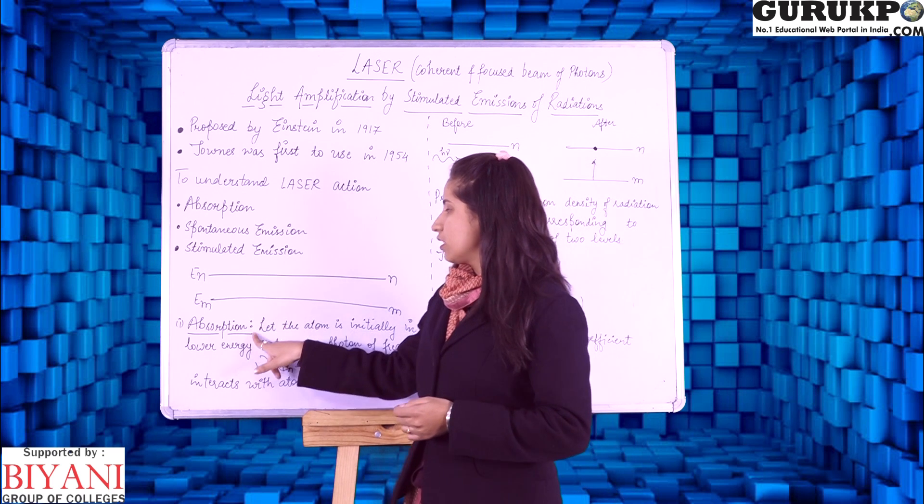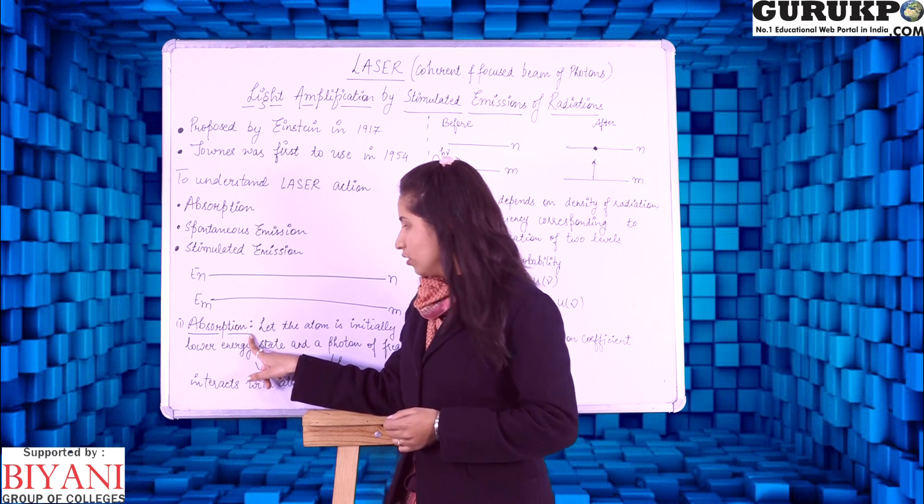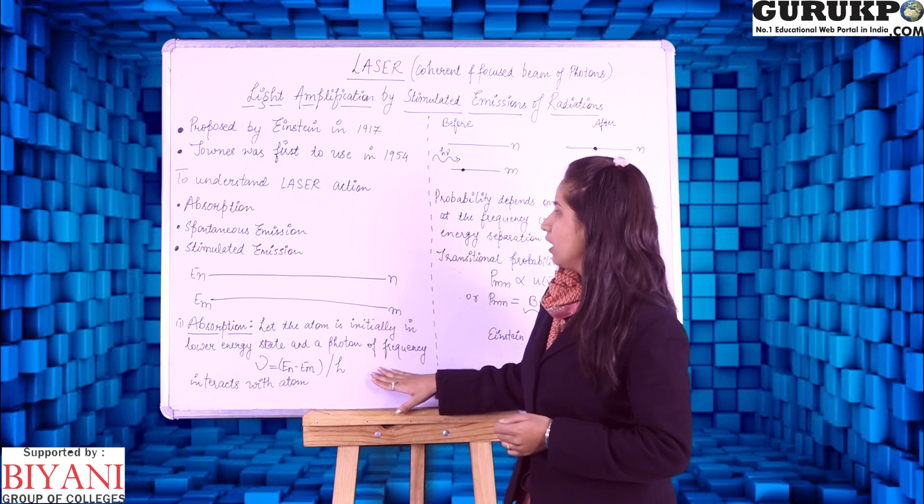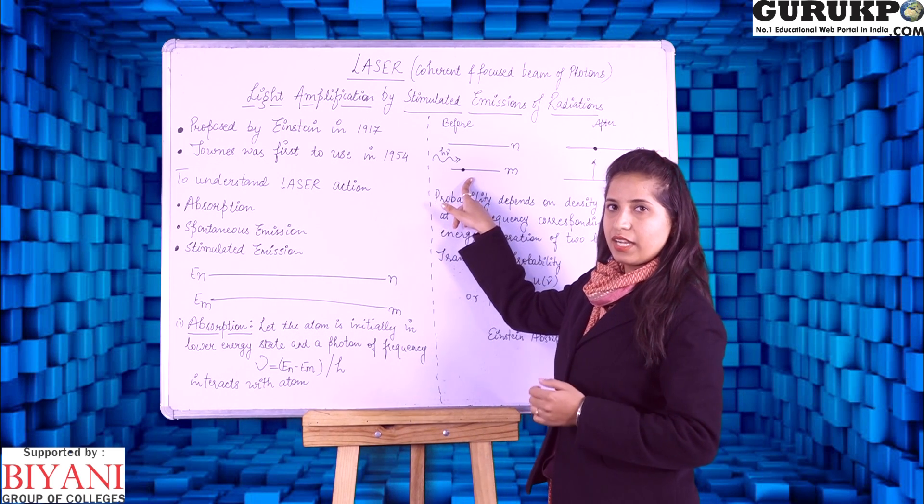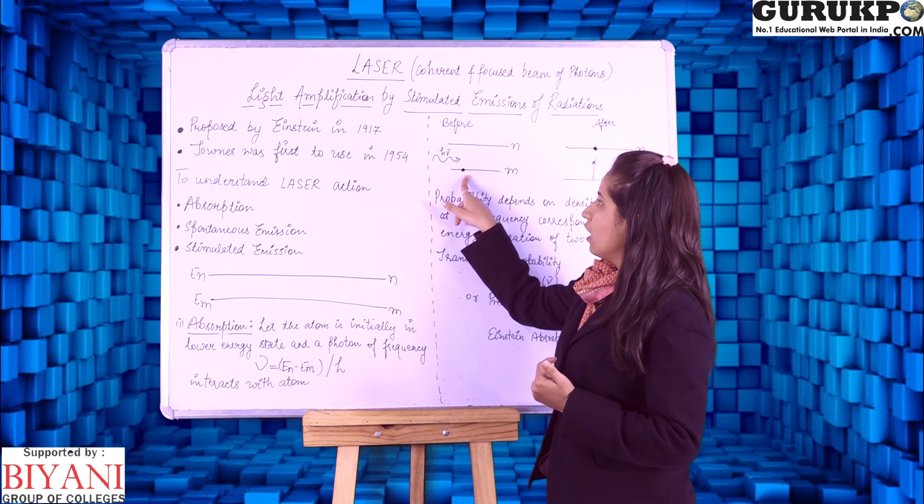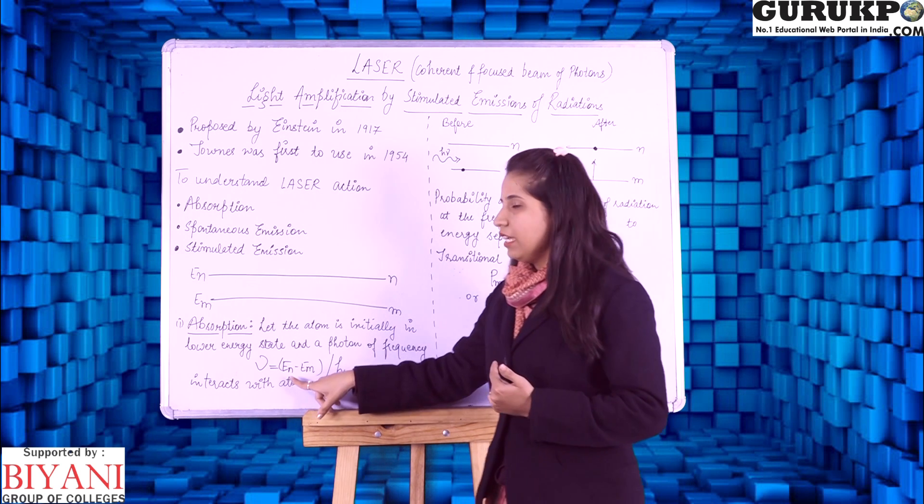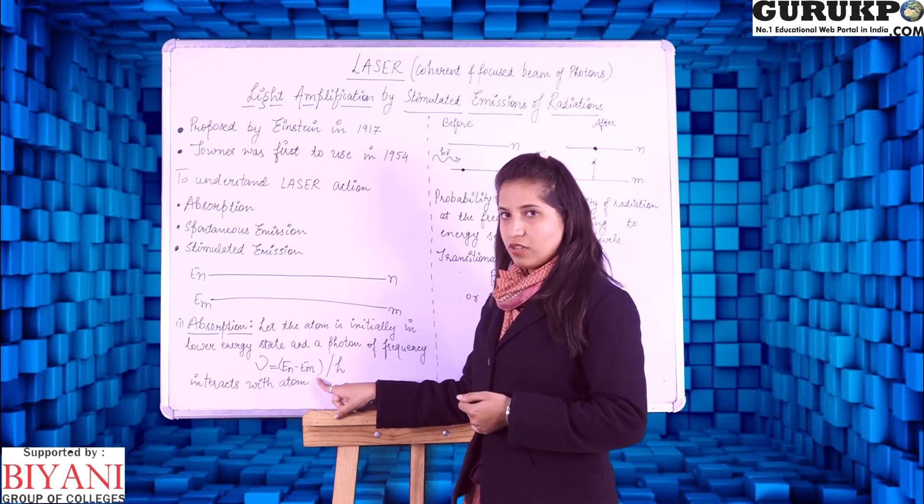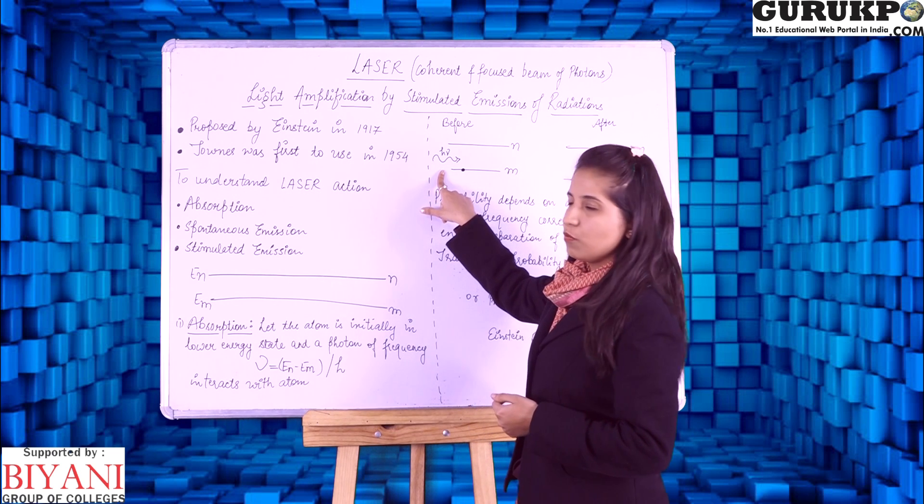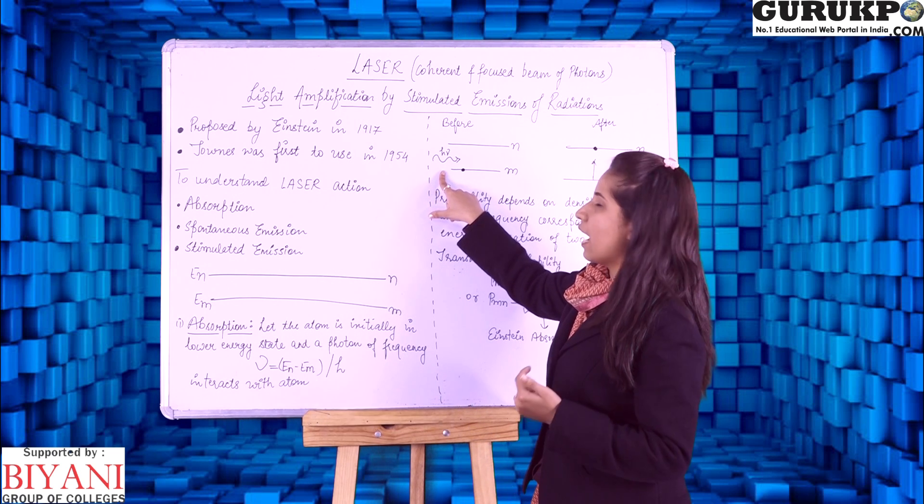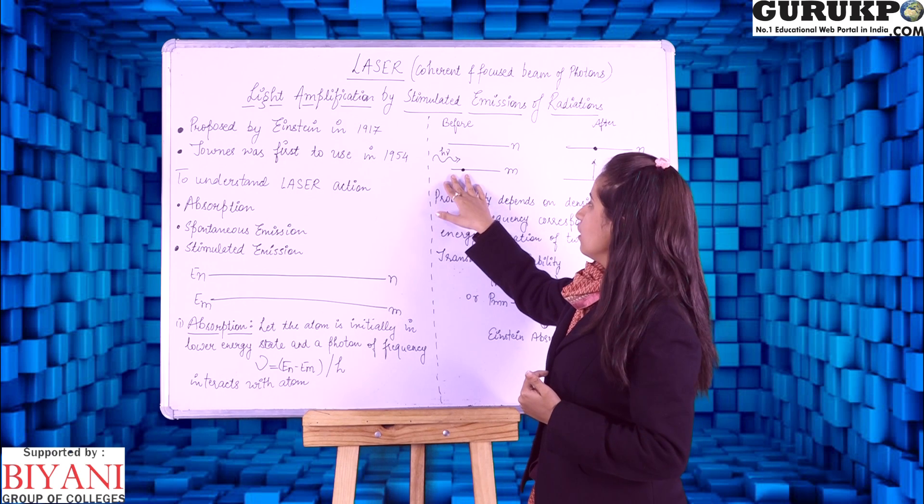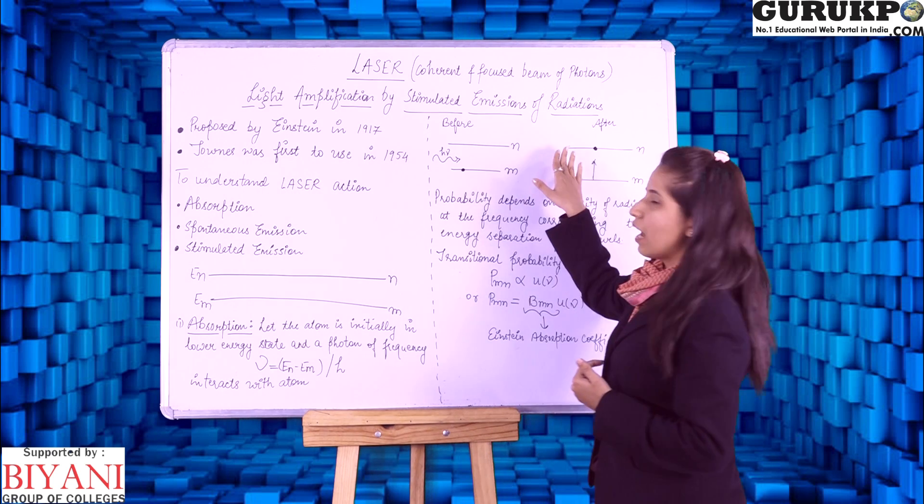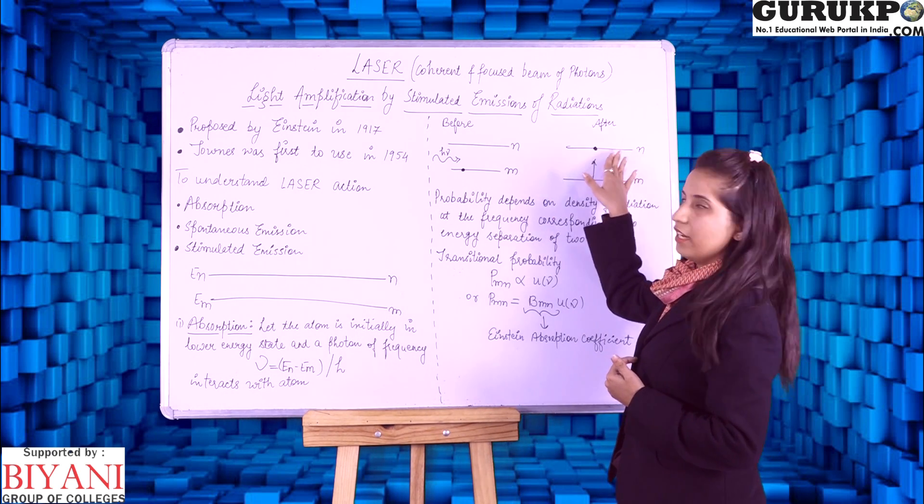First of all, we will study about the topic absorption. Let the atom is initially in its lower energy state that is emeth state. Then a photon of a frequency (En minus Em) by h cross or you can say h mu interacts with this atom or molecule. Then this molecule goes to the higher energy state that is the nth state.